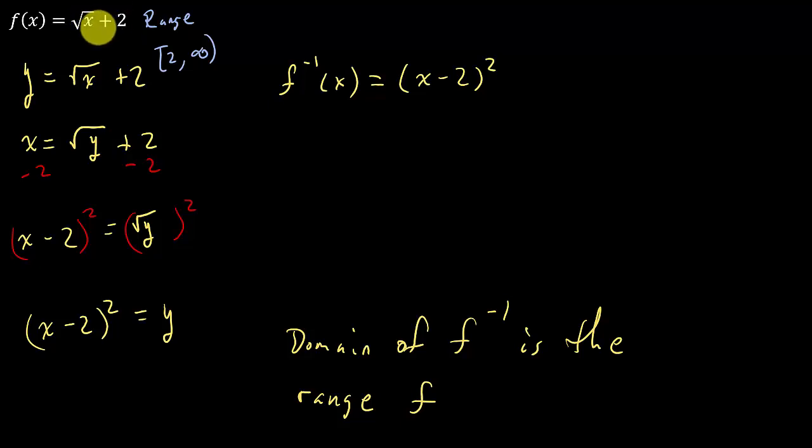No matter what we plug in for x, as long as it's in the domain, we're always going to get a number from two to infinity. Because we've got two plus, and this is either zero or a positive number. Alright? So that's the range.